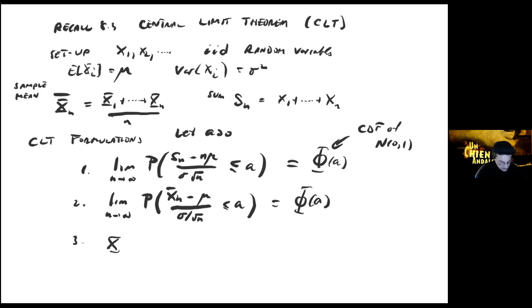The third way I want to formulate it is in a way that's easy to remember. If we look at the sample means, for each n we get a different sample mean. There's a sequence of random variables X̄ₙ. X̄ₙ converges to N(μ, σ²/n). The standard deviation will be σ/√n as n goes to infinity. These are all equivalent formulations of the Central Limit Theorem.